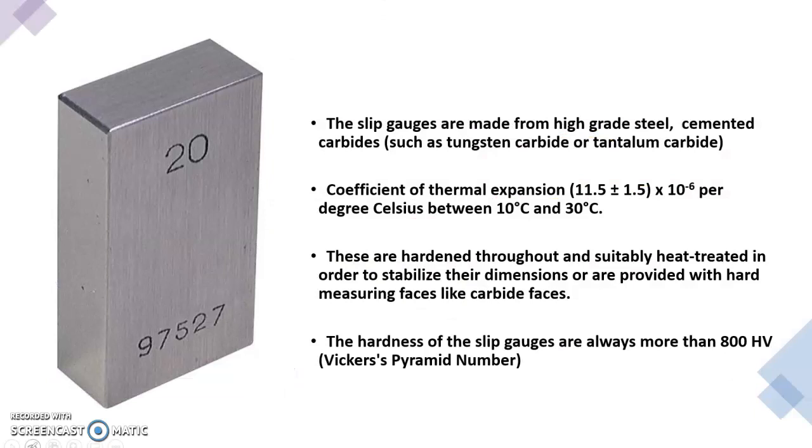Here we are discussing some features of slip gauges. These are made from high grade steel cemented carbides such as tungsten carbide or tantalum carbide. Then the coefficient of thermal expansion will be minimum for these kinds of gauges.